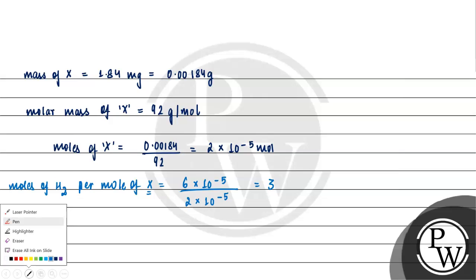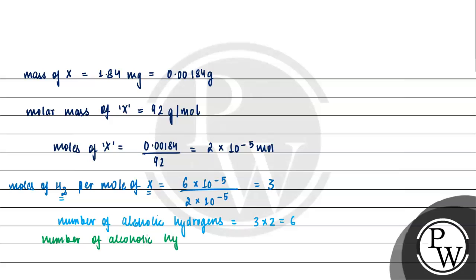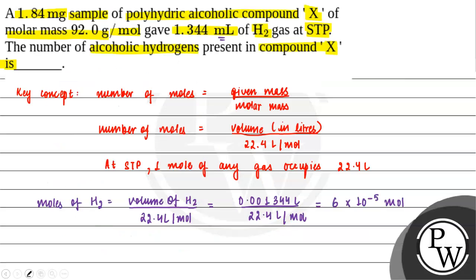Now, let us determine the number of alcoholic hydrogens — humara final answer hoga. Each mole of H2 gas produced corresponds to 2 alcoholic O-H groups reacting, so the number of alcoholic hydrogens in compound X is 6. Our final answer for the question would be 6. I hope you understood the question well. Best of luck.